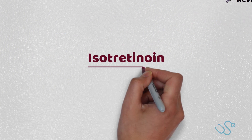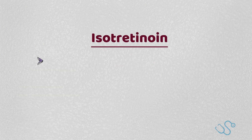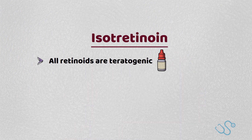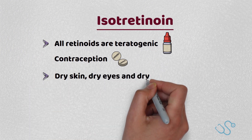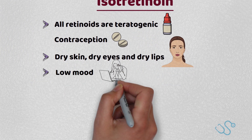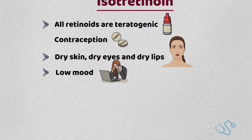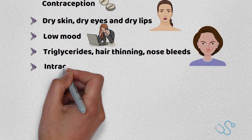Generally speaking, dermatologists prescribe isotretinoin for severe acne treatment, usually to good effect. However, there are a number of caveats. All retinoids are teratogenic, so women are advised to use at least two forms of contraception, such as a combined pill and condoms, to prevent unwanted pregnancies. Dry skin, dry eyes and dry lips are a common complaint. There is also evidence that low mood may be exacerbated, and thus psychological impact really needs to be observed. Patients may also experience raised triglycerides, hair thinning, nosebleeds, and there is even some evidence of raised intracranial hypertension.